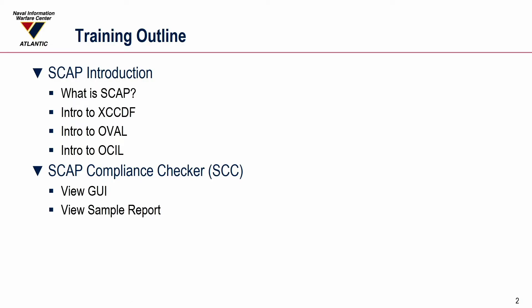Here's an outline of what we're going to talk about — basically an SCAP introduction. What is SCAP? We'll briefly walk through each one of the specifications: XCCDF, OVAL, and OCIL. Understanding those makes it easier to understand why SCAP applications work the way they do and to help you understand the results that come out of SCAP validated applications. Then we'll look at the GUI and view a sample report. Most demonstrations will be coming in subsequent videos.